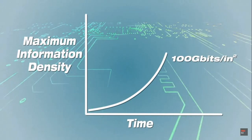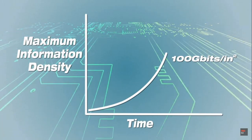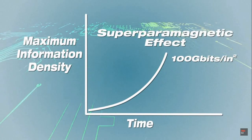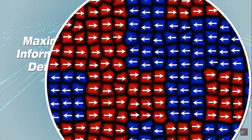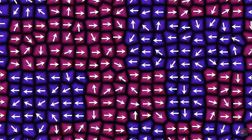But at around 100 gigabits per square inch, shrinking the magnetic grains further or cramming them closer together posed a new risk, called the superparamagnetic effect. When a magnetic grain volume is too small, its magnetization is easily disturbed by heat energy and can cause bits to switch unintentionally, leading to data loss.